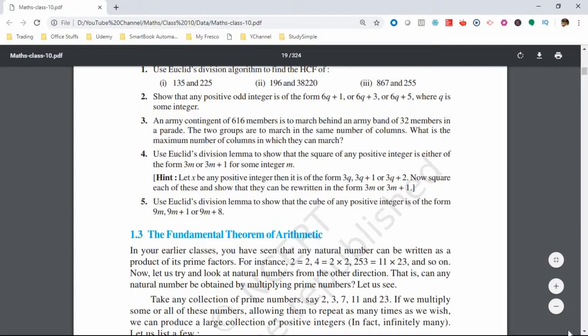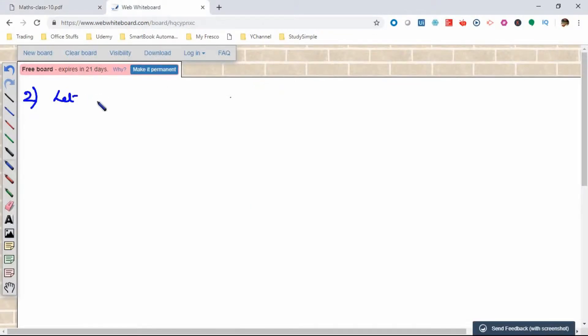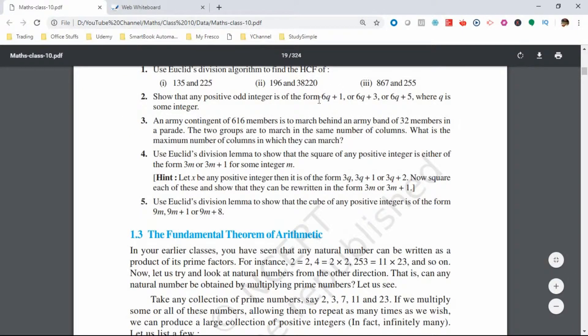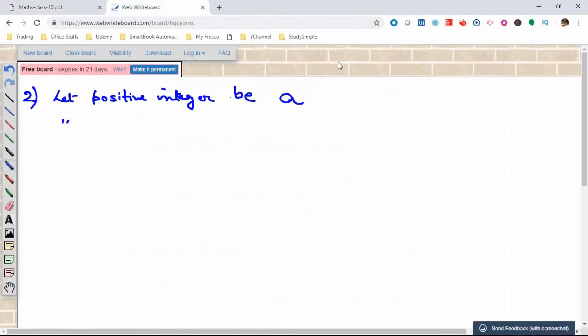Let the positive integer be a. The trick of this sum is that everything is in the form of 6: 6q, 6q, 6q. So we will do b equals 6. The two terms are a and b, which are from Euclid's equation: a equals bq plus r.